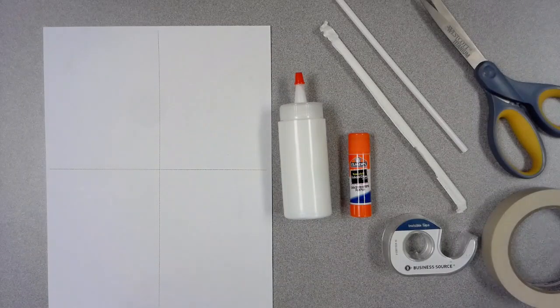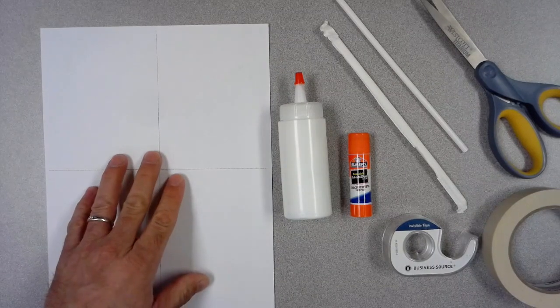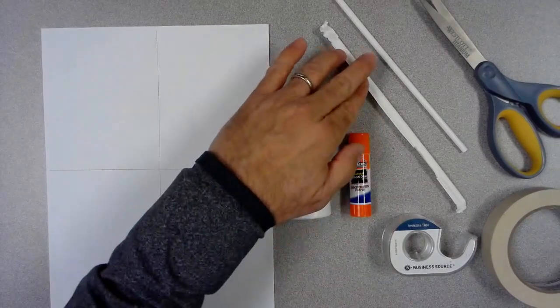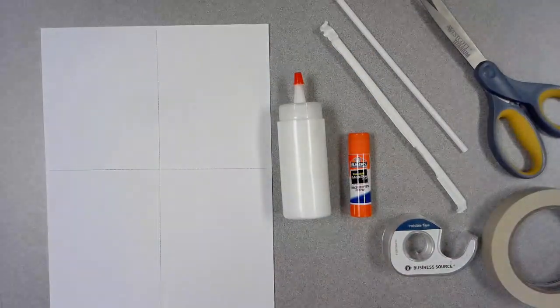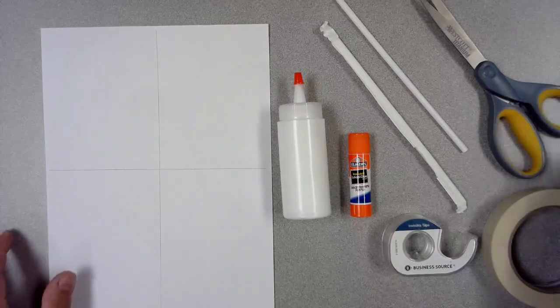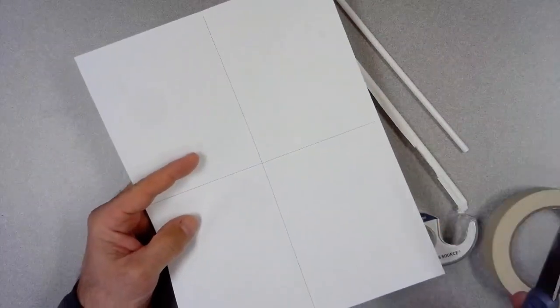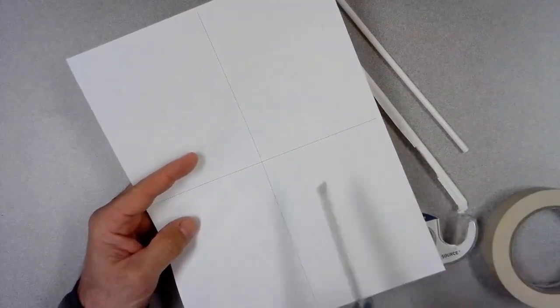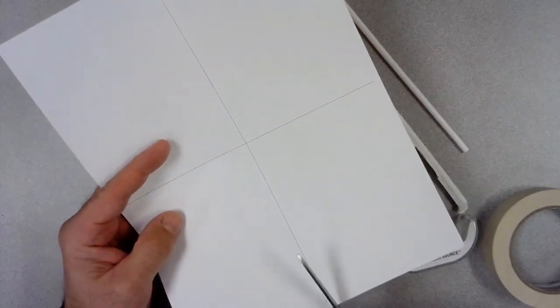To build the fuselage we'll need the fuselage paper, your glue, a straw, your scissors, and some tape. And what I'm going to do to start out with is I'm going to cut that sheet of paper into four medium sized rectangles.